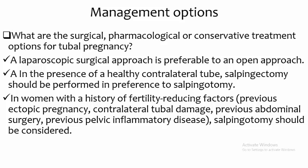Regarding management options: what are the surgical, pharmacological, and conservative treatment options for tubal pregnancy? A laparoscopic surgical approach is preferable to the open approach. In the presence of a healthy contralateral tube, salpingotomy should be performed in preference to salpingectomy. In women with a history of fertility-reducing factors — previous ectopic pregnancy, contralateral tubal damage, previous abdominal surgery, previous pelvic inflammatory disease — salpingectomy should be considered.